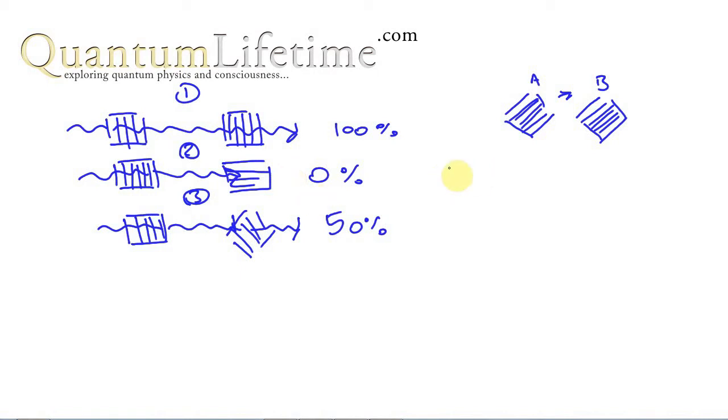And some people think that the photon must really have something coded within it that would actually determine, if we only knew it, whether it will get through the second filter. But it turns out that it's very difficult to sustain that point of view.